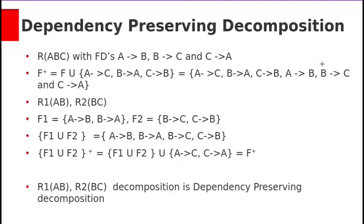To understand this more clearly, let's see an example. Suppose we have relation R with attributes A, B, C and functional dependencies: A → B, B → C, and C → A. Let us call this entire set as F.